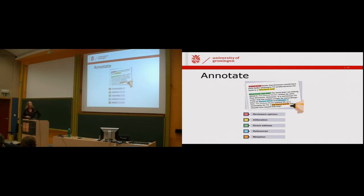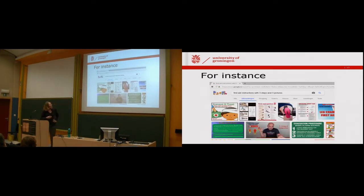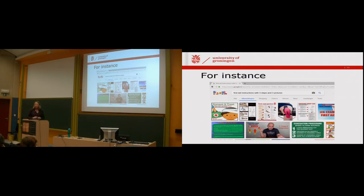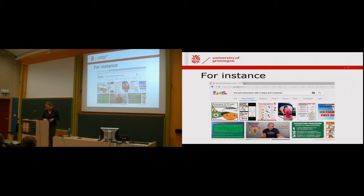That's what we're doing in digital humanities, and that's what I'm doing in my project on pictures and text. For instance, if I take Google again and type: I want all first aid instructions consisting of three text steps and three pictures — Google basically cannot do it. You just get a lot of information back, but not those specific instructions. I want to be able to retrieve those from a large corpus of instructions with text and pictures, so I can see the similarities and differences between those documents.